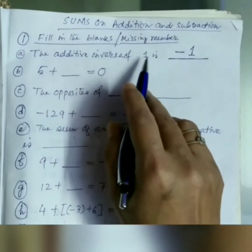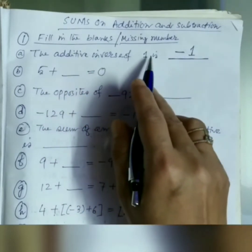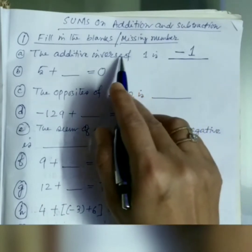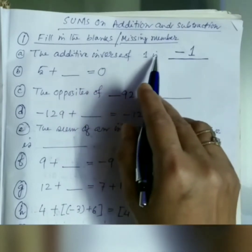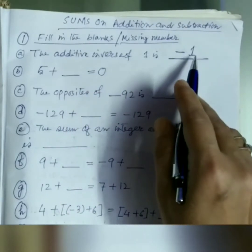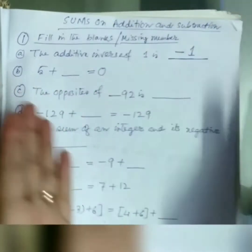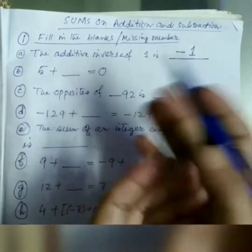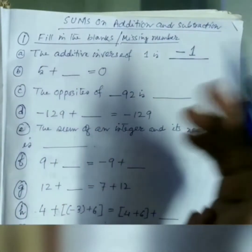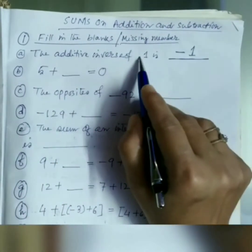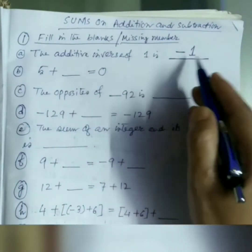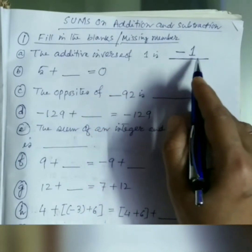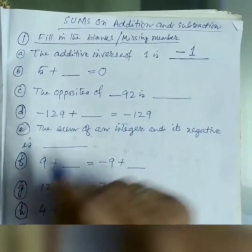What is the additive inverse of minus 1? If you have minus 1, you will put plus 1. Additive inverse means opposite, or negative — we may say it in three ways. So if the question is minus 1, the answer is plus 1. If it is 1, the answer is minus 1.